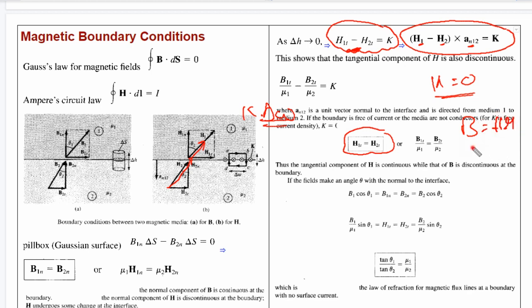Since B equals H mu and H equals B by mu, we can convert between them. For the tangential component of magnetic field intensity, when there is no current, magnetic flux density is discontinuous in the tangential component.